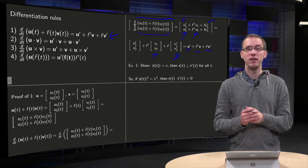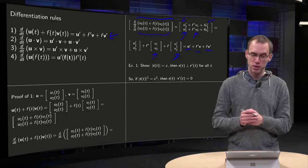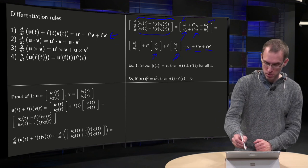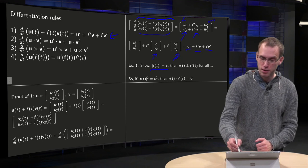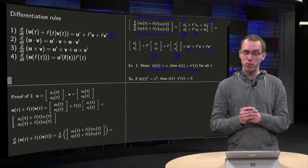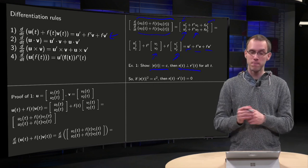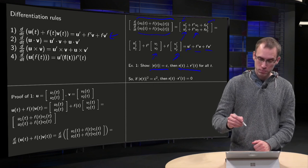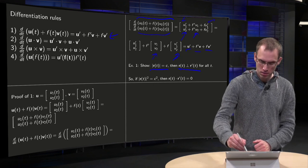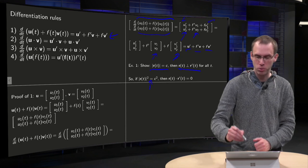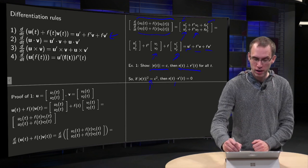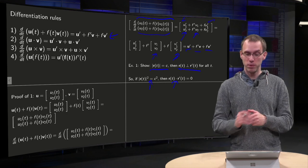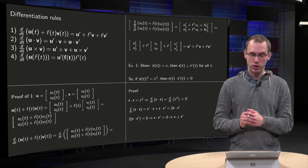And you can prove the other rules in a similar way. Now, an example. Show that if the norm of some vector is a constant, that r is orthogonal to r prime for all t. How do we do that? Well, this means that if the norm squared is a constant, then r is orthogonal to r prime. So the inner product of r with r prime is to be equal to zero.